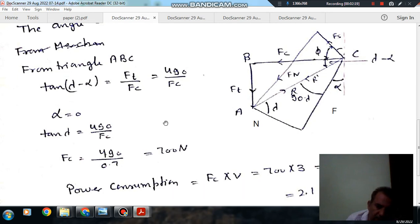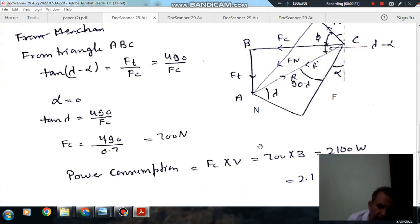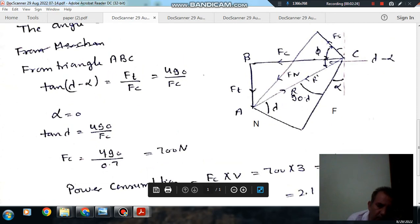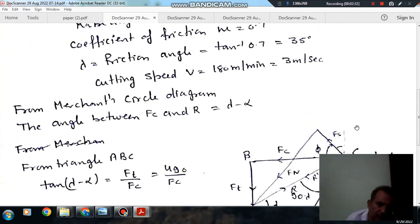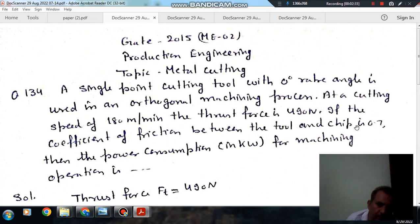So after finding out cutting force, it will be multiplied by cutting velocity, then it will be the power. So Fc into v is your power. So v is 3 meter per second. So that is 2100 watt or 2.1 kilowatt.